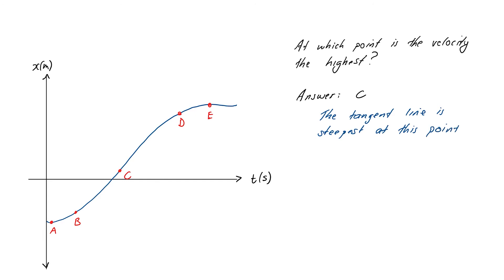So that's velocity. We know we can get velocity from displacement time graphs by taking tangent lines, and we can also get a good estimate by taking a small interval and computing average velocity over that interval.